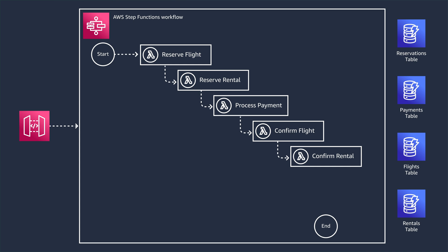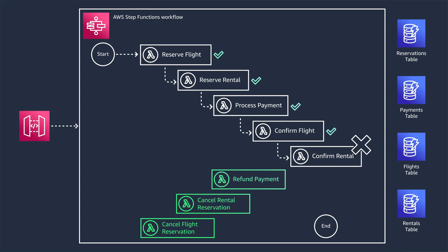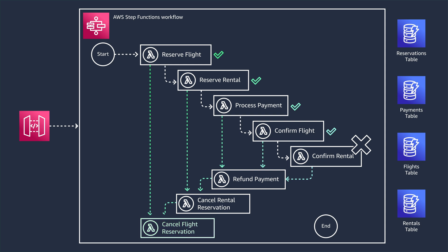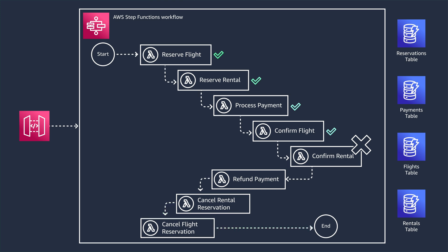The Saga pattern specifies that in the case of a failure, a set of compensating transactions can be executed to undo the changes made by the preceding local transactions. Instead of having the undo logic on the same function, you implement an equivalent undo step to roll back the changes. So if any step in the distributed transaction fails, you can revert it through compensating transactions. For example, if it fails while processing a payment, the compensating transactions would execute to refund the payment, cancel the rental reservation, and cancel the flight reservation. Ultimately, the Saga pattern guarantees success for all steps, or compensating transactions are run to amend a partial execution.